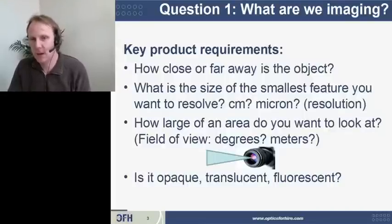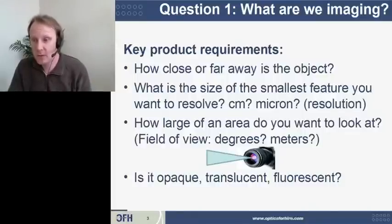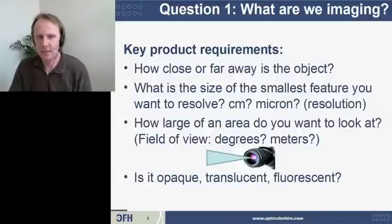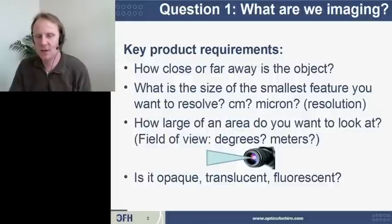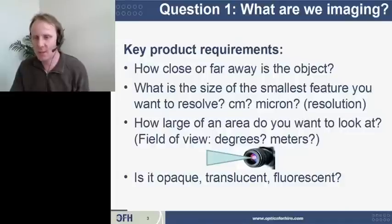How close is it? How far away is it? What is the smallest feature that you want to take a picture of — is it in meters or microns? How big of an area are we taking a picture of? Is it a one centimeter square area that's a foot away, or is it a 10 meter area that's 10 meters away? And is the object itself opaque, translucent, or fluorescent? You may not have an answer to all of these, and that's acceptable.